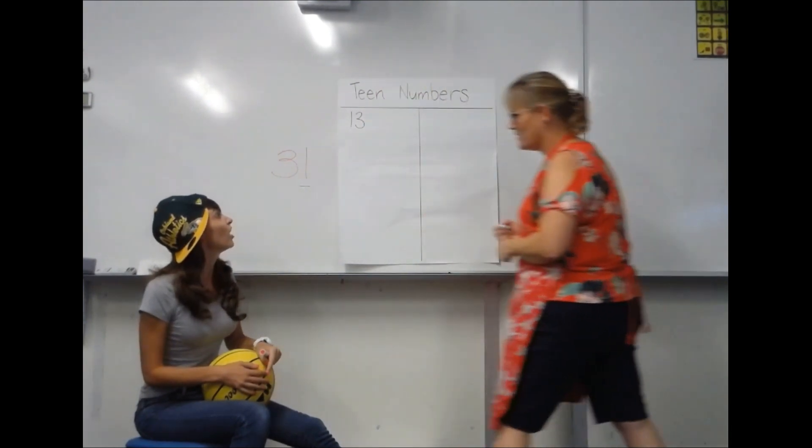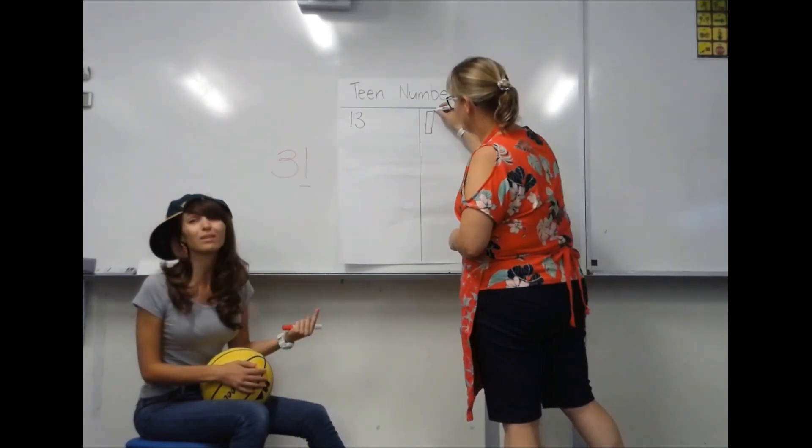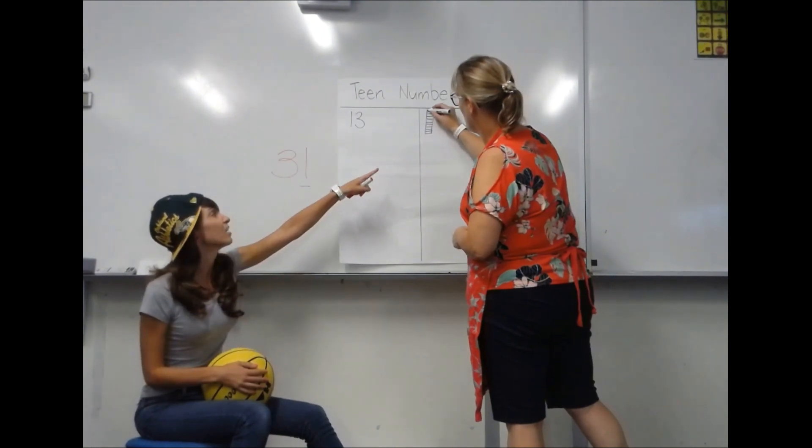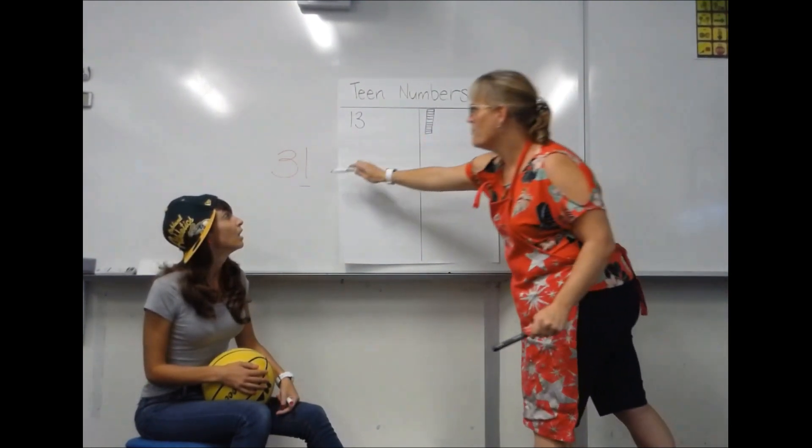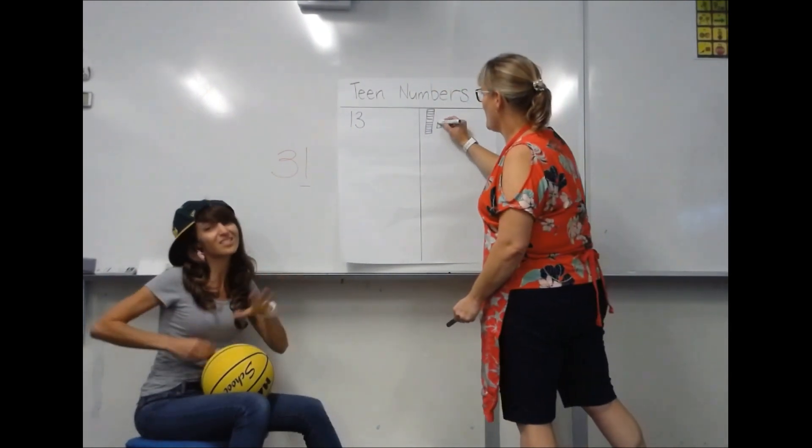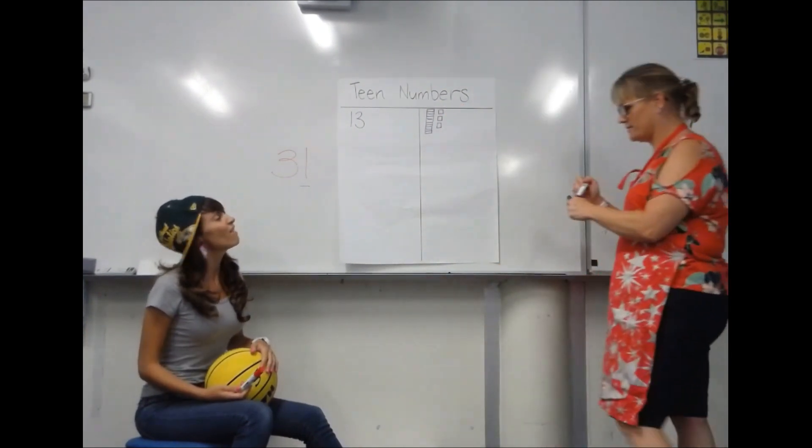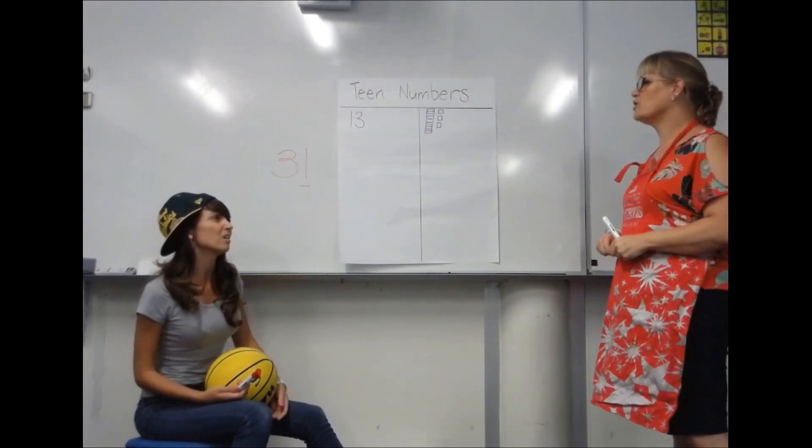So if I drew a picture of 13 with place value, what would that look like? That's a ten block showing ten for bossy teen. Oh yeah, because a one is pretending to be a ten. Ten. Three ones. Thirteen. So if I was to add that up, you're saying that would make 13. Correct.